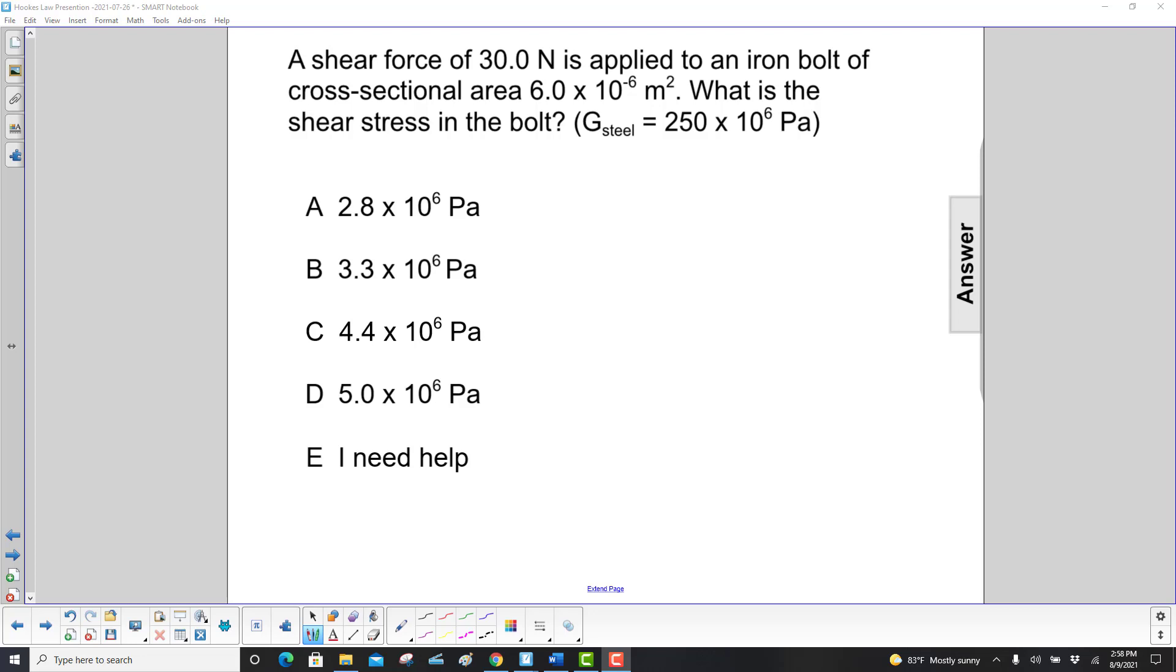A shear force of 30 newtons is applied to an iron bolt of cross-sectional area 6 times 10 to the minus 6 square meters. What is the shear stress in the bolt?